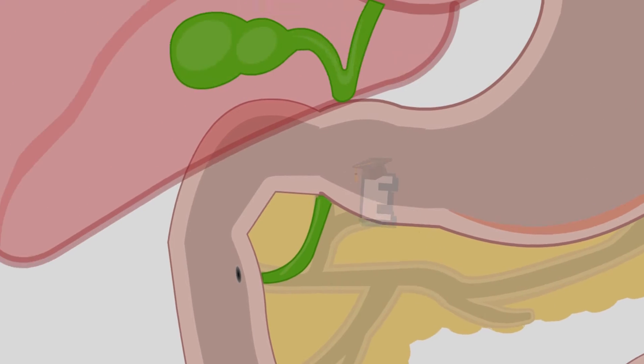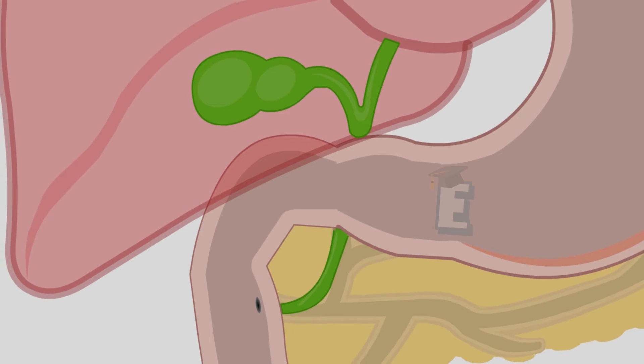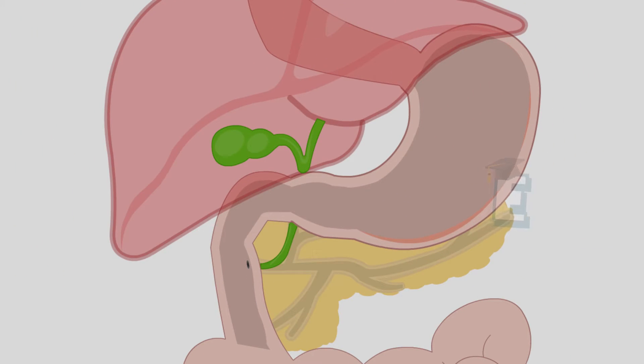The liver produces bile salts to help emulsify fats before they are digested by pancreatic lipase. When the food has been broken down, it moves to the jejunum and ileum to have its nutrients absorbed.